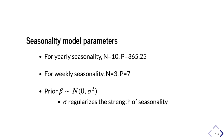What are the parameters in the seasonality model? For yearly seasonality, the default order of the Fourier series N is 10, and the period P equals 365.25. For weekly seasonality, N equals 3 and P equals 7. The vector of weights beta follows a normal distribution with mean zero and standard deviation sigma, where sigma regulates the strength of the seasonality.